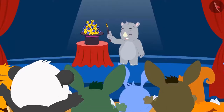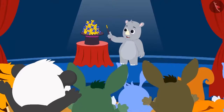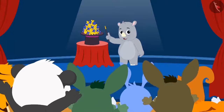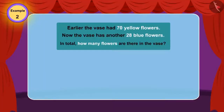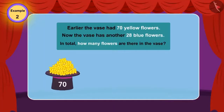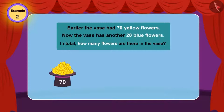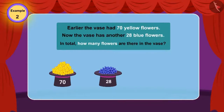They clapped really, really hard. In the flower vase earlier, there were 70 yellow flowers. Now, in the flower vase, there are 28 flowers more. How many total flowers are there in the vase?